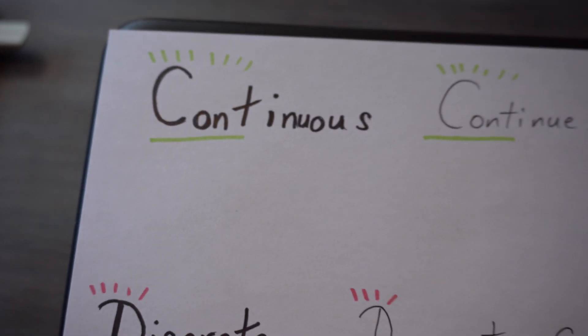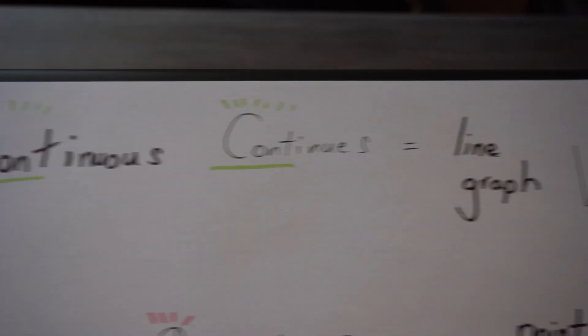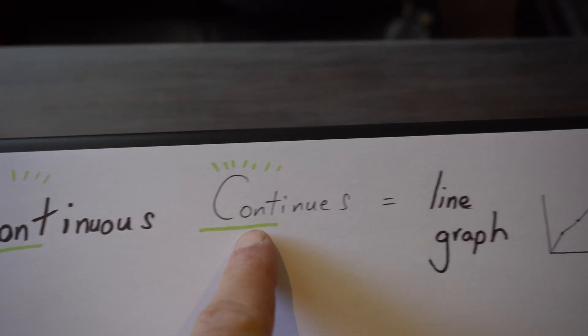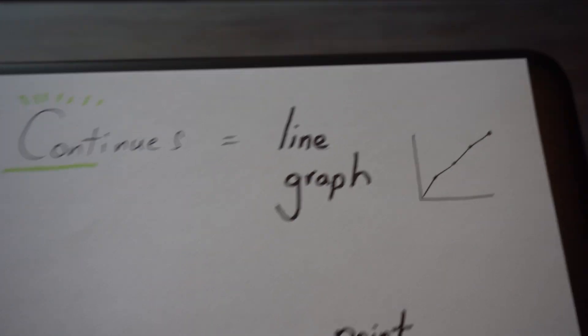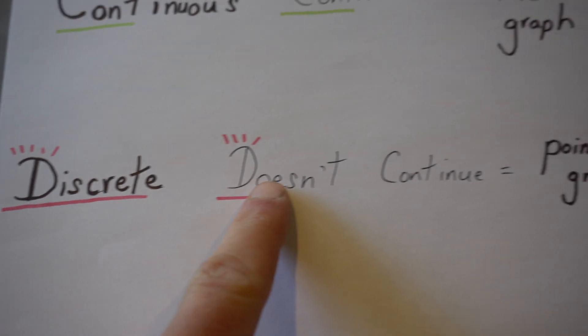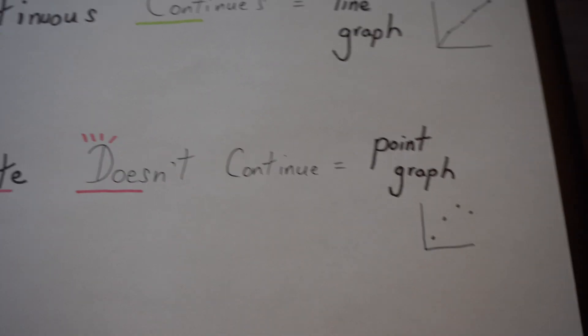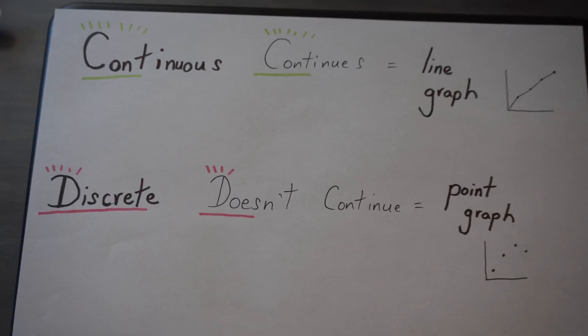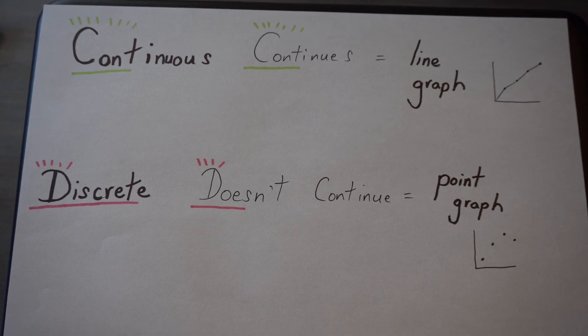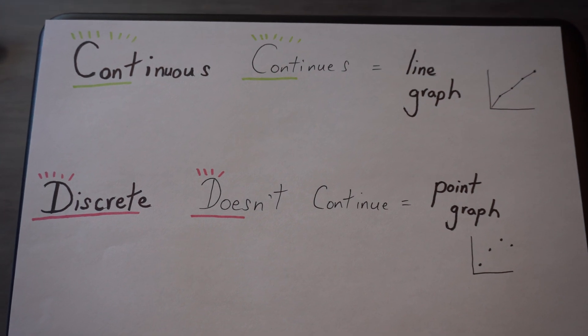One last time again. Continuous, continue. See? And you use the line graphs. Discrete doesn't continue, and you use point graphs. There you go. Line graphs, point graphs, continuous, discrete, the end.